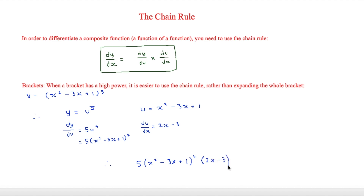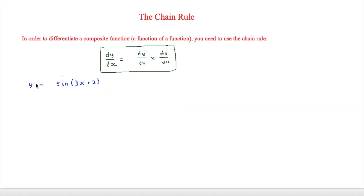That is a much easier way of doing it than expanding all of those brackets, because that would take forever. The next question says that y equals sin(3x plus 2). As we can see, this is a composite function — a function of a function. Again, we split this up: y equals sin(u), and u equals 3x plus 2.